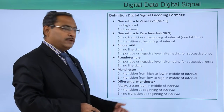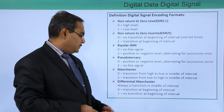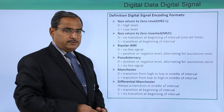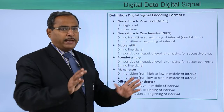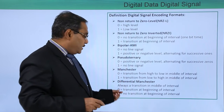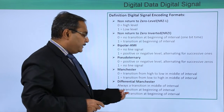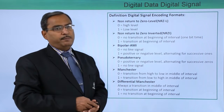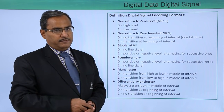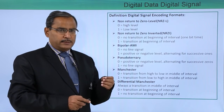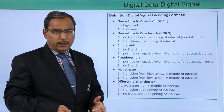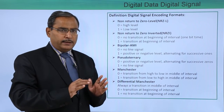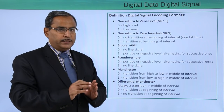The last one is Differential Manchester. In Differential Manchester, there is always a transition in the middle of the interval for both 0 and 1. Additionally, 0 means a transition at the beginning of the interval, and 1 means no transition at the beginning. So 0 has transitions at both the beginning and middle, while 1 has a transition only at the middle.